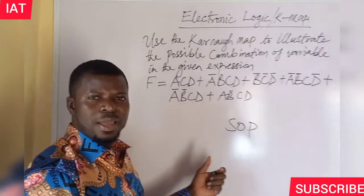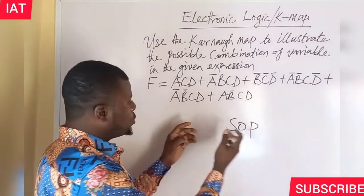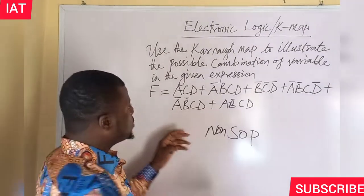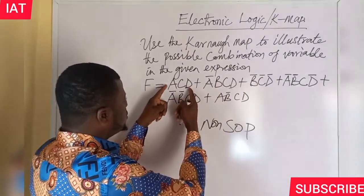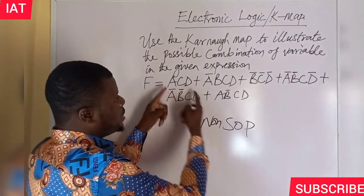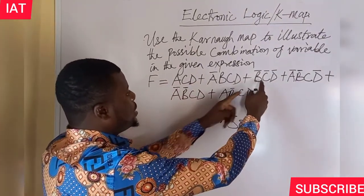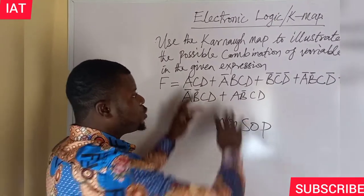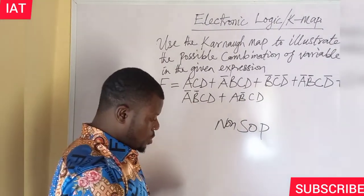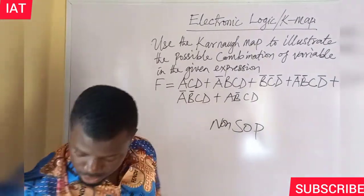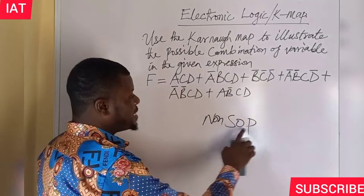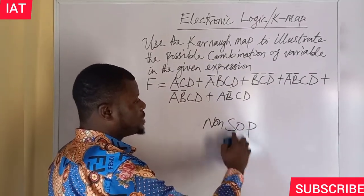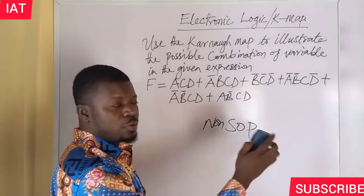So, why do we call it non-SOP? It's because if we check here, we miss a variable here. We also miss a variable here. A is missing here and B is missing here. So we need to convert this to what we call the standard SOP — standard sum of products — before we can solve it.